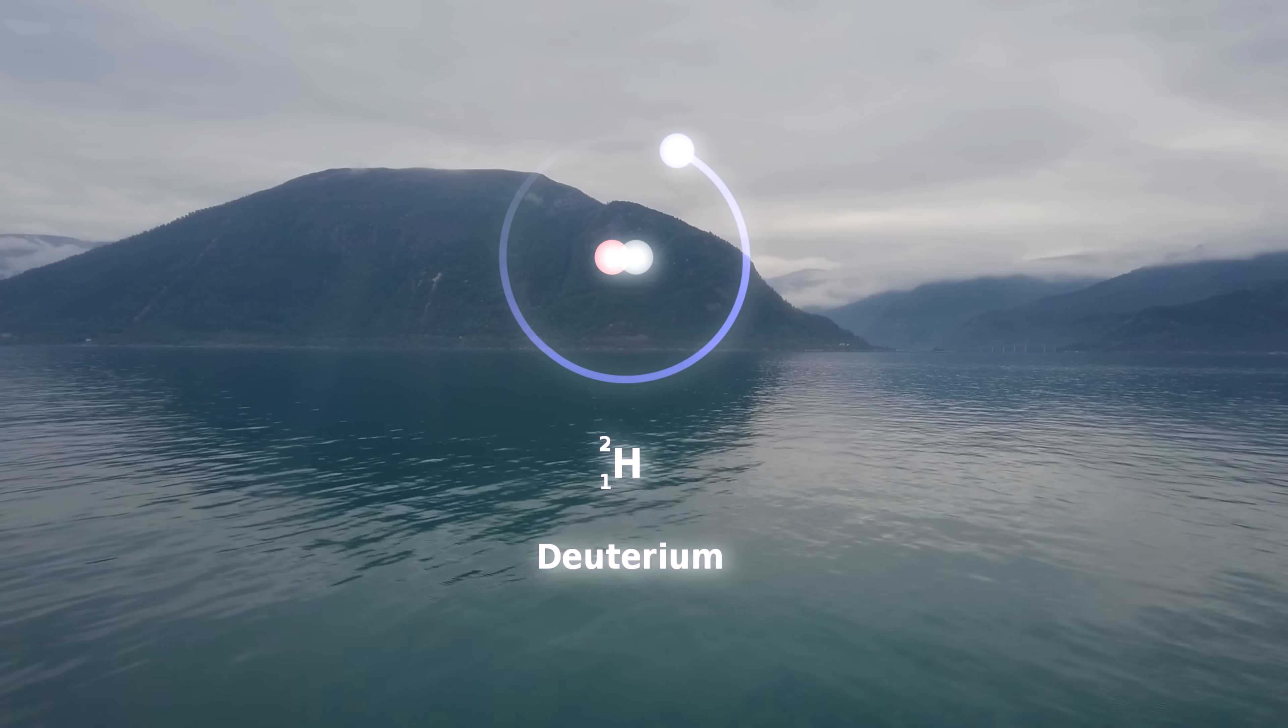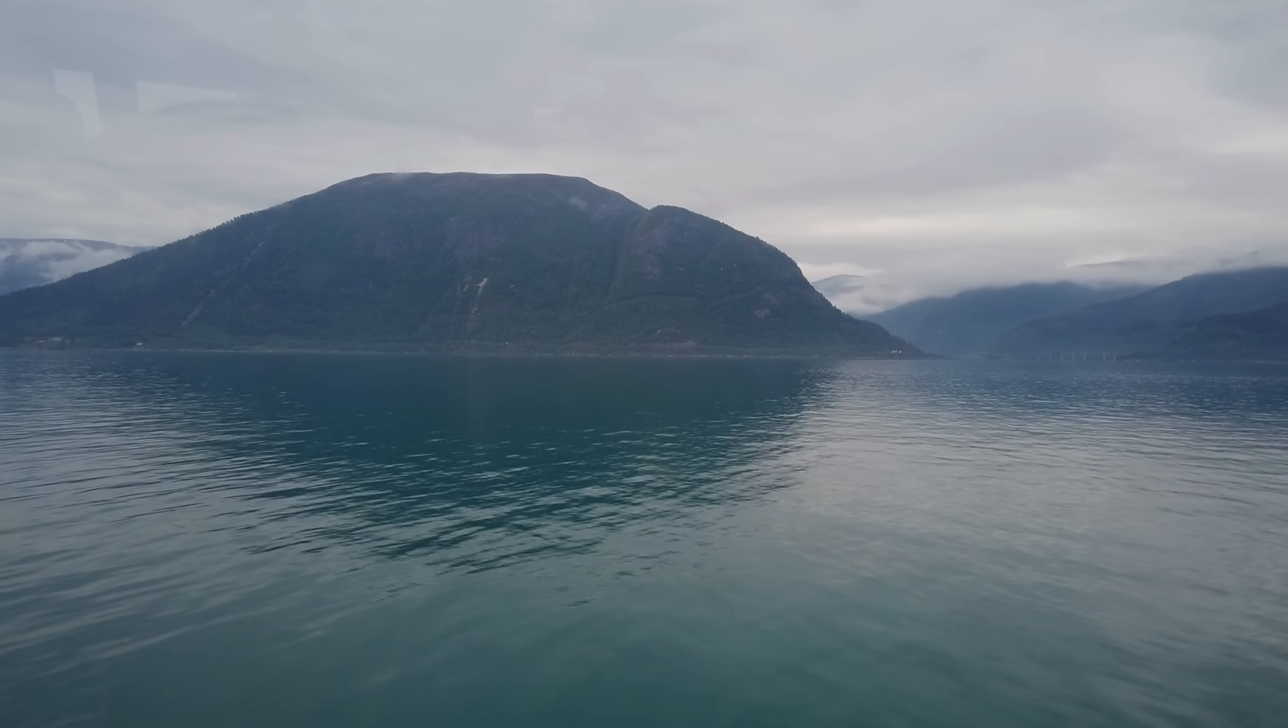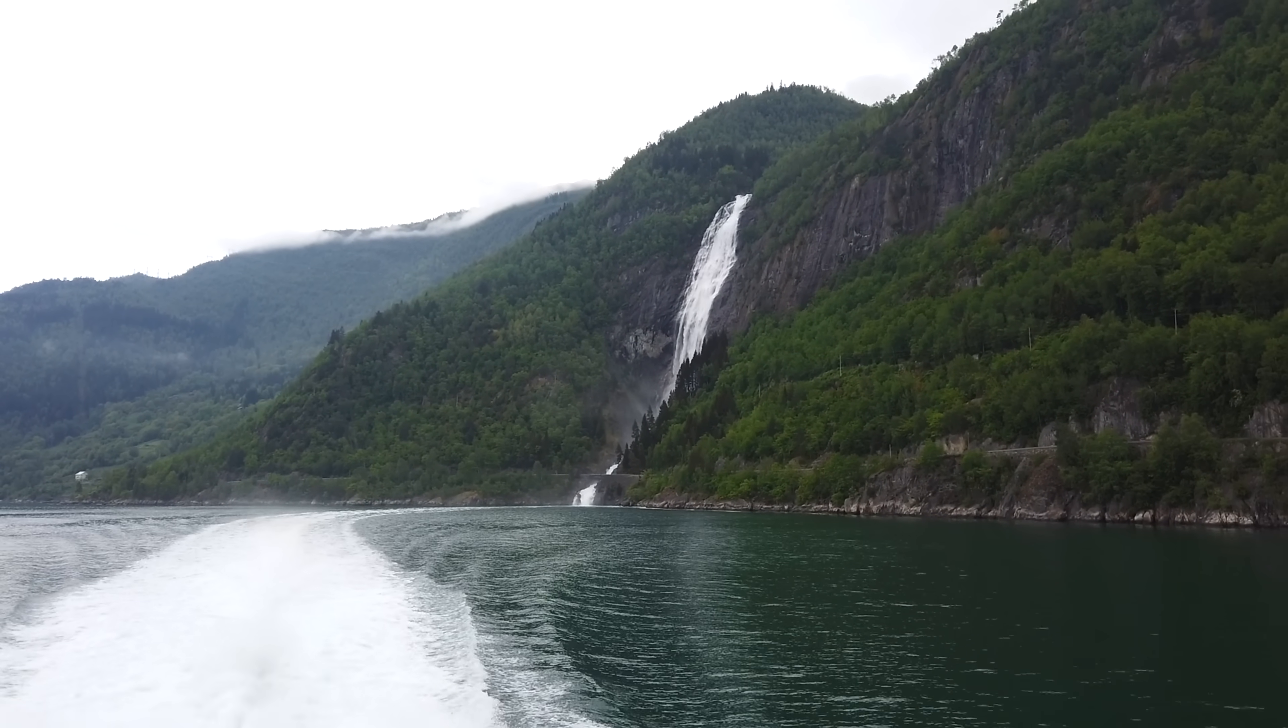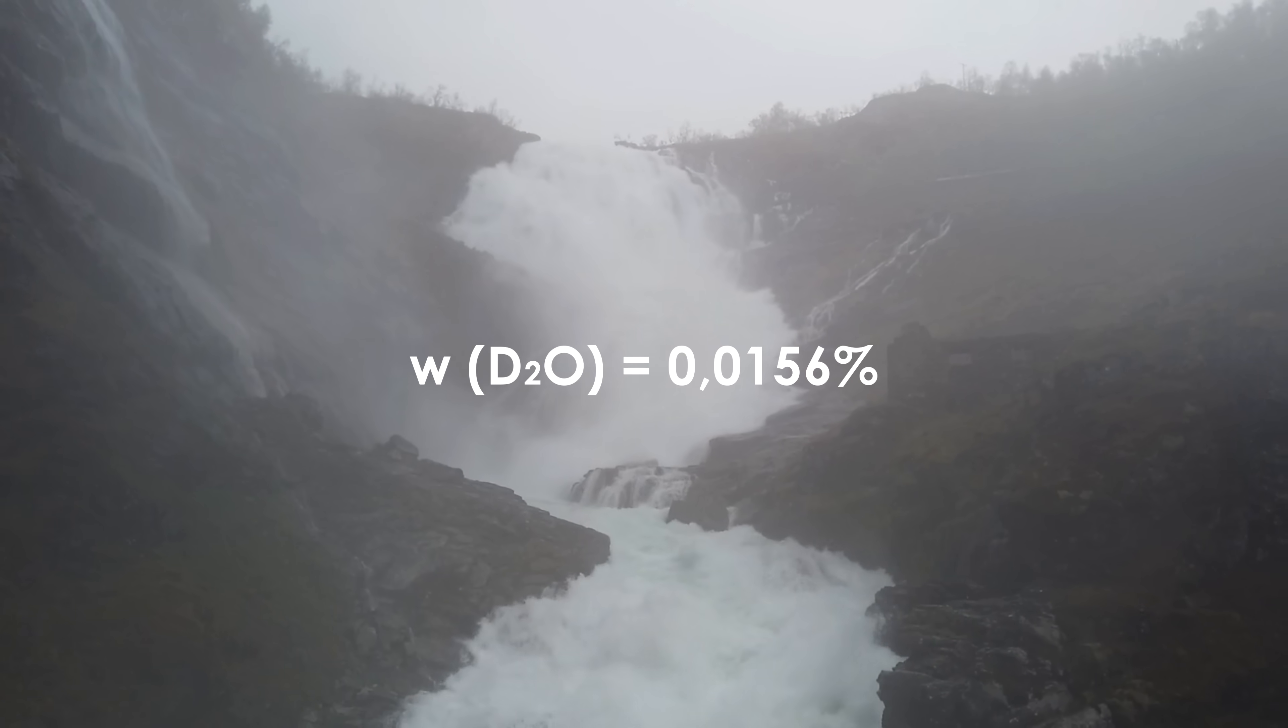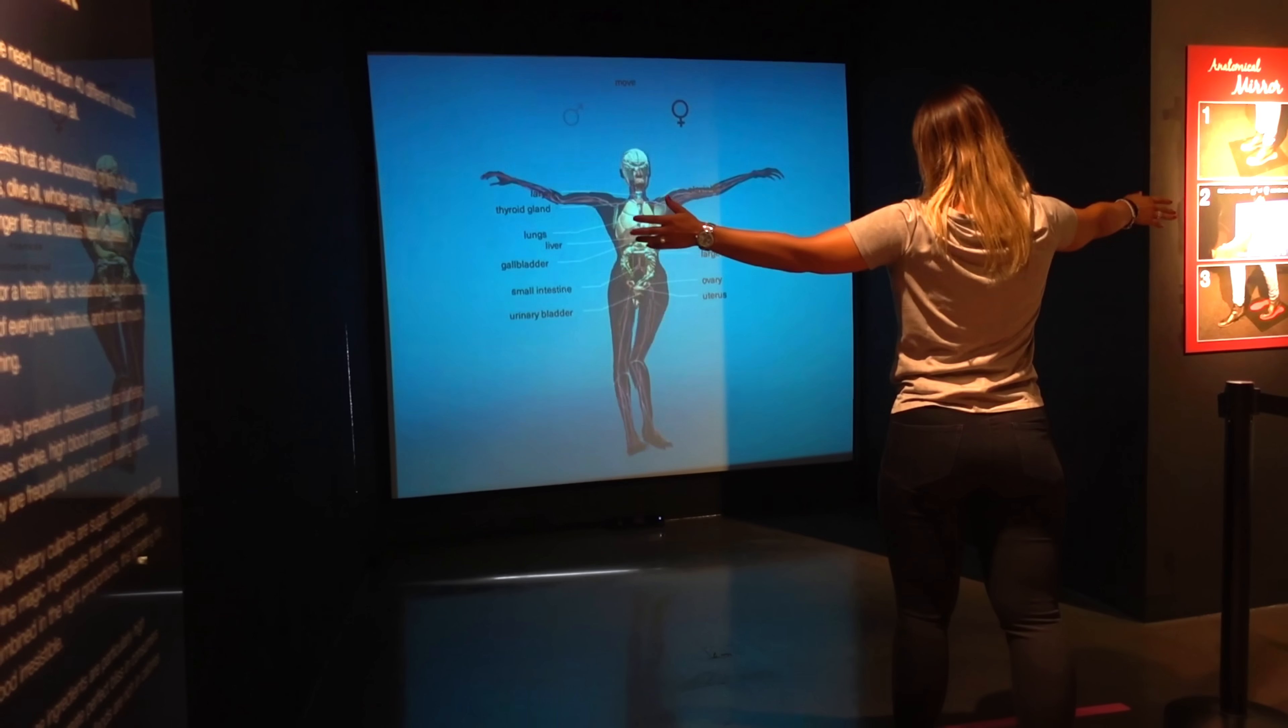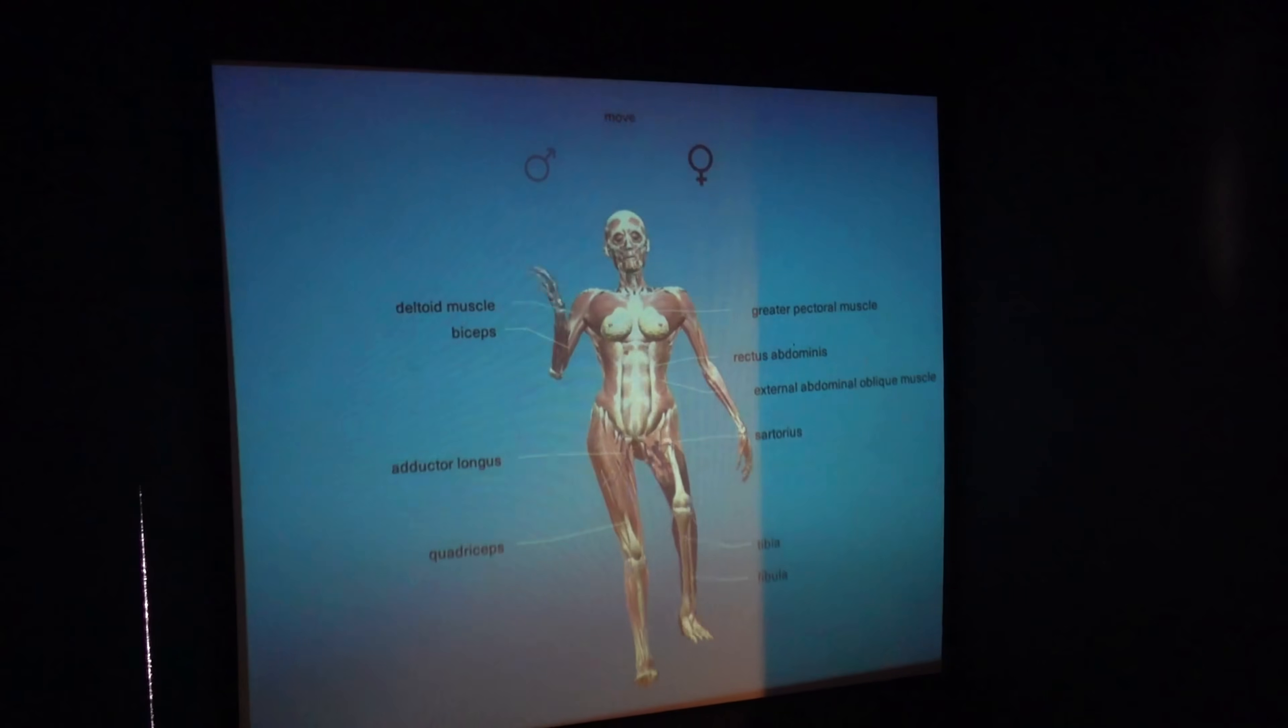Besides unstable tritium, there also exists deuterium, which is also known as heavy hydrogen. In contrast to tritium, it is a stable isotope and occurs naturally in regular water in the form of deuterium oxide. Its concentration in water is very small. Human body isn't an exception either. Roughly 70% of it is water, including heavy water.